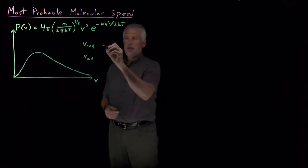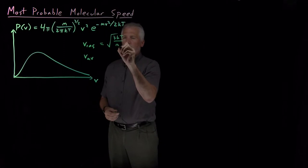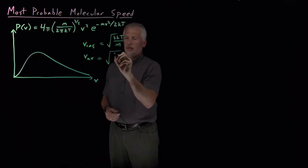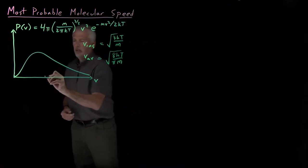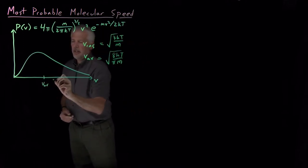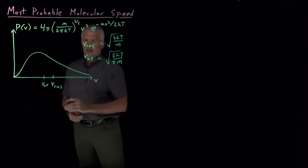And those are not the same value. The average speed is a little larger than the peak of this distribution. The root mean square speed is a little bit larger still.